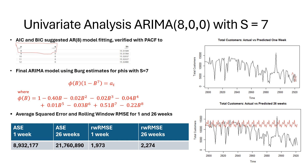Moving forward, we can see from the AIC and BIC that an AR(8) model fitting was suggested. This was also verified by the PACF plot we saw earlier. Our final ARIMA model with S equals 7 uses BERT estimates for the coefficients. The average squared errors and rolling window RMSEs for the 1-week and 26-week horizons can be seen here. The 1-week forecast outperformed the 26-week forecast on both the ASE and rolling RMSE.